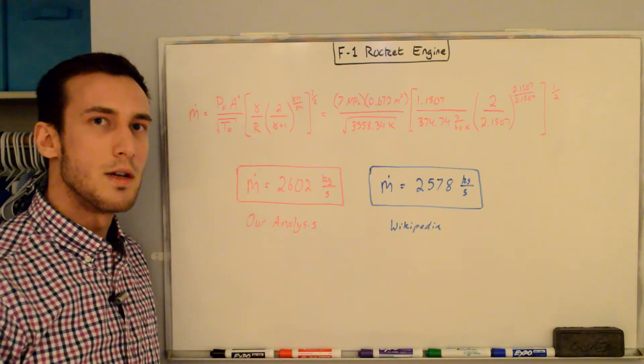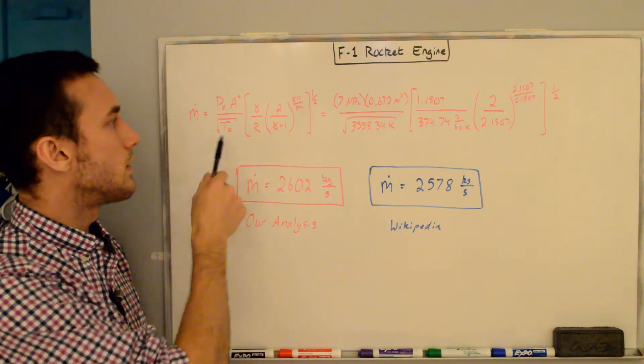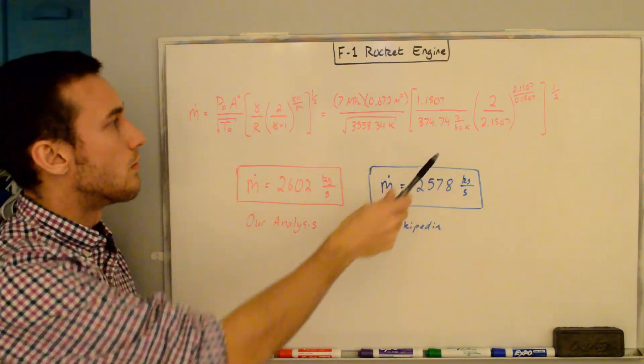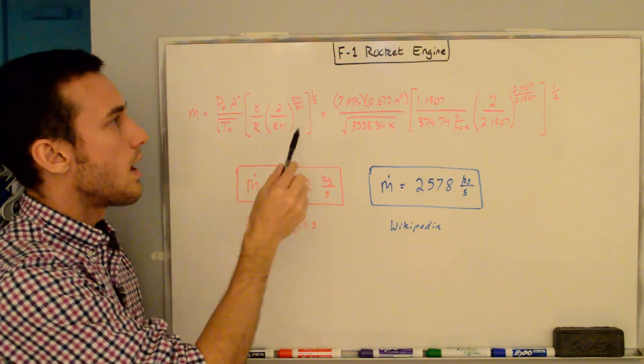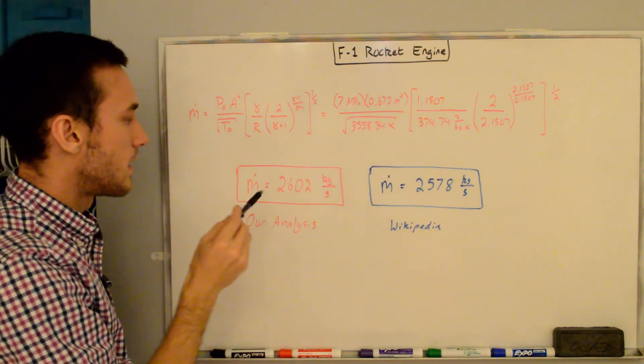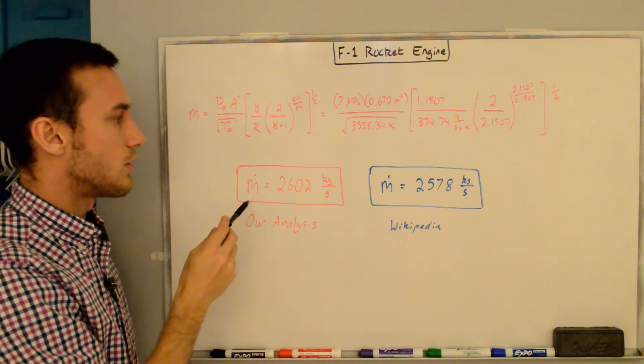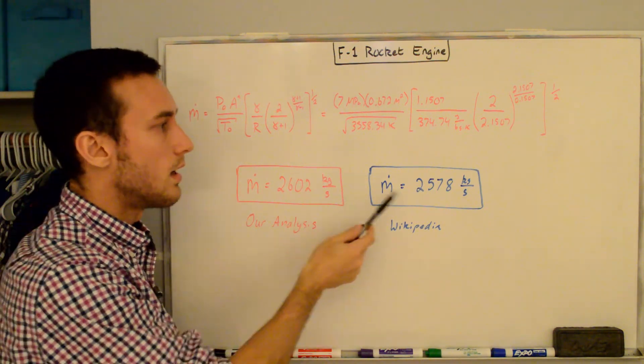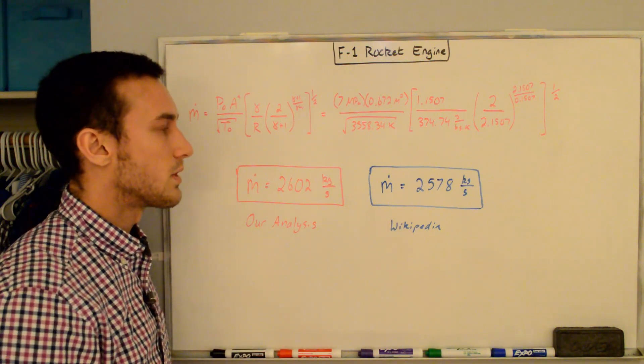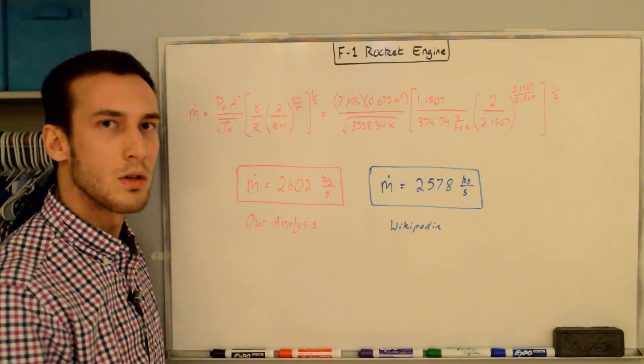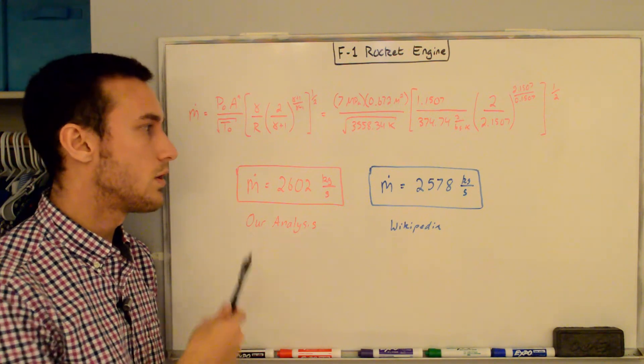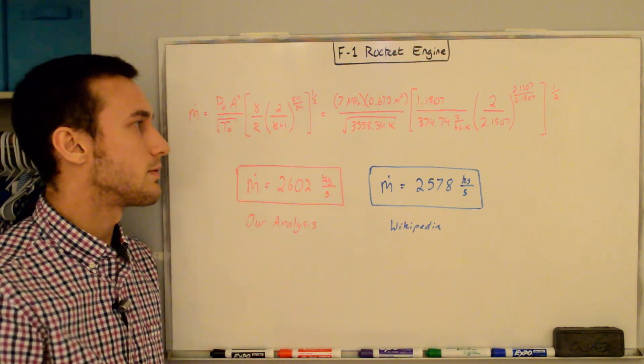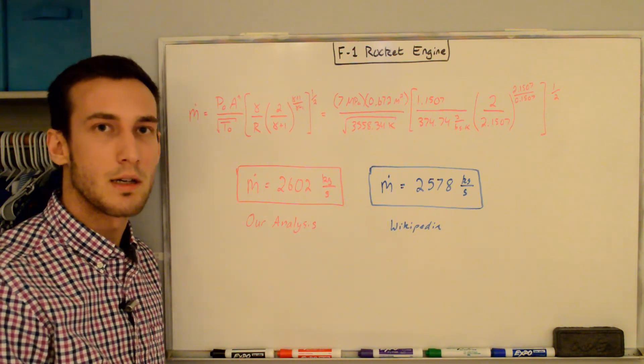Now that we have all the variables we need to compute the mass flow rate, we just plug it into the mass flow rate equation, repeat it here, and you can see that right here. I've just plugged in all those known values, and when you put this in your calculator, you get that the M dot from our analysis is 2,602 kilograms per second, and this compares to the M dot from Wikipedia of 2,578 kilograms per second pretty well. They're actually very close. So this shows you that you can get pretty close in terms of the mass flow rate just by assuming a simplified form of the mass flow rate equation and using some specs you can find online.